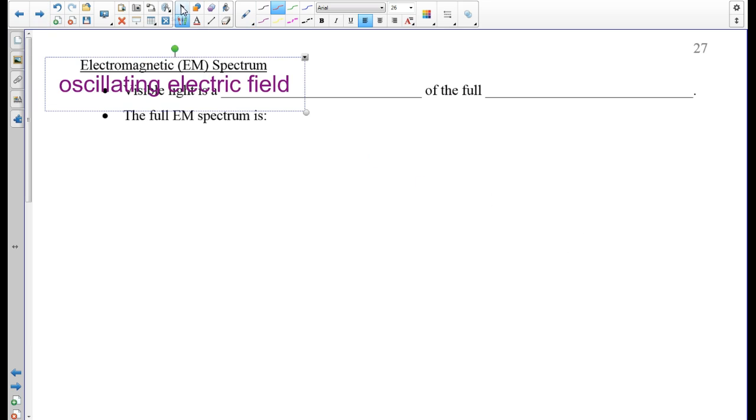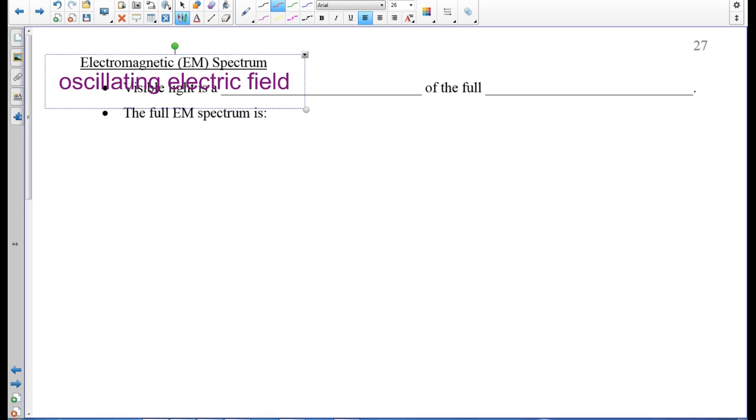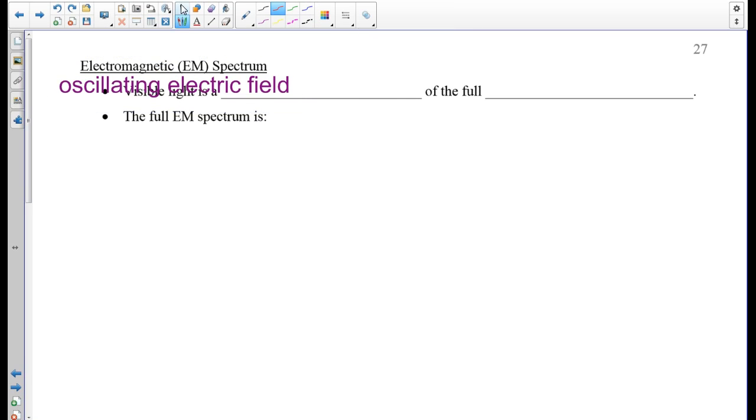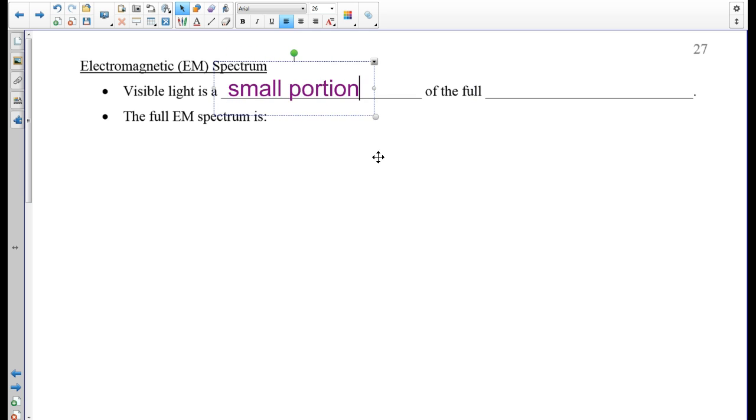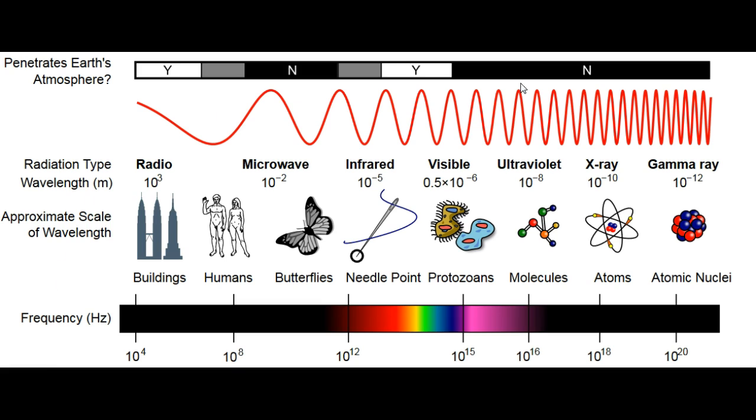Visible light is one small sliver of the entire electromagnetic spectrum. It's a small portion of the full EM spectrum. This is something we learned probably in chemistry last year. There is a broad range of electromagnetic radiation that we can produce. Visible light is one little sliver.